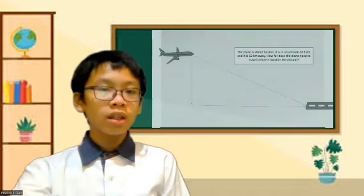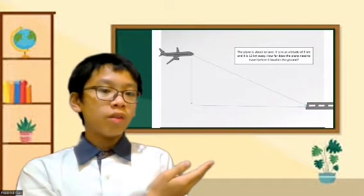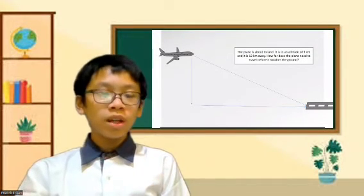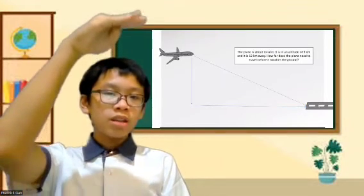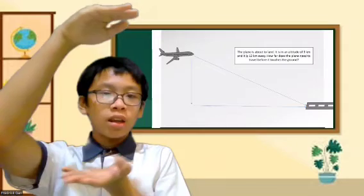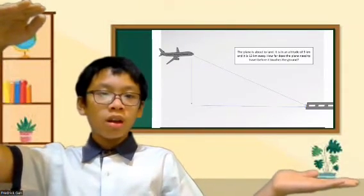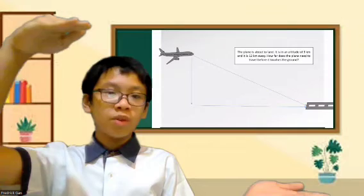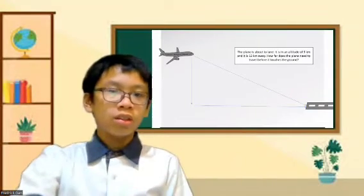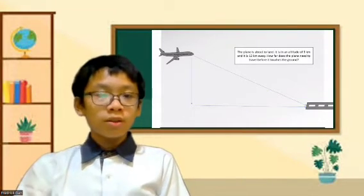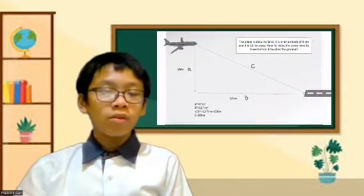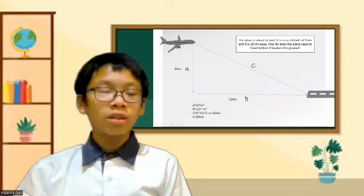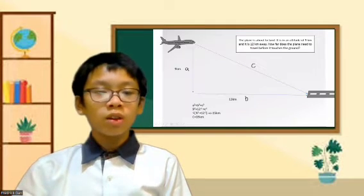This shows another example of a plane. The plane is about to land. It is at an altitude of 9 kilometers from the ground and it is 12 kilometers away. How far does the plane need to travel before it touches the ground?